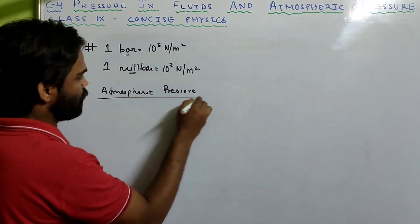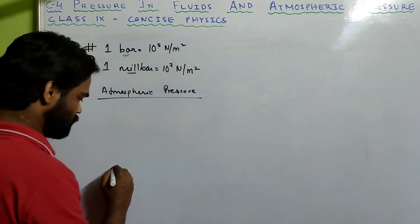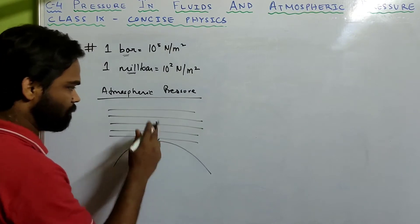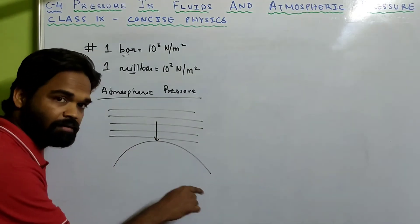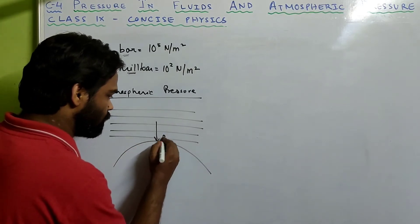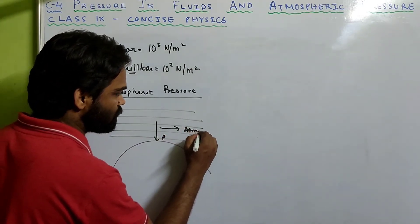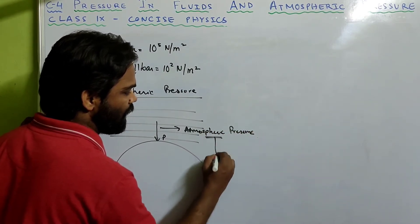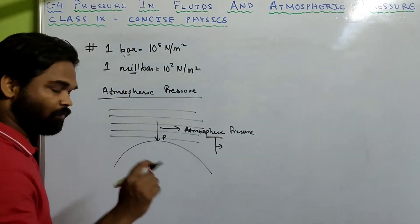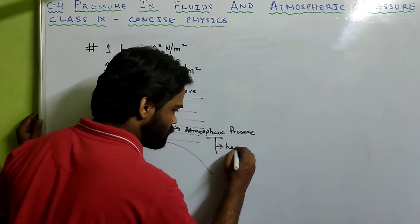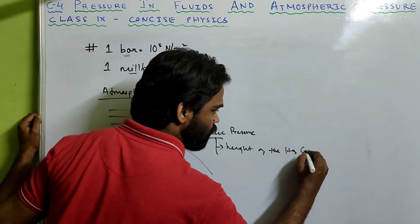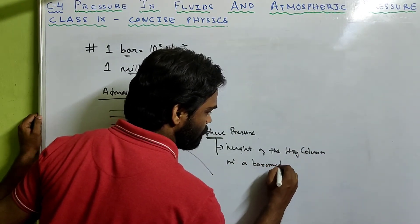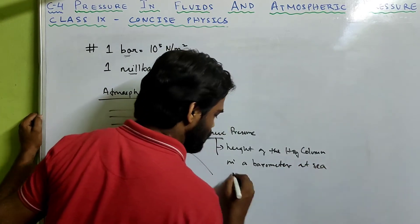What is atmospheric pressure? The Earth is surrounded by a layer of air. The pressure exerted by this layer of air on the surface of the Earth is known as atmospheric pressure. Atmospheric pressure is measured with respect to the height of the mercury column in a barometer at sea level.